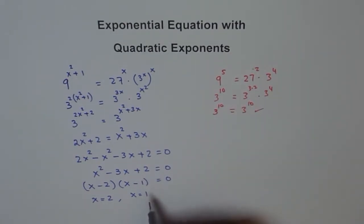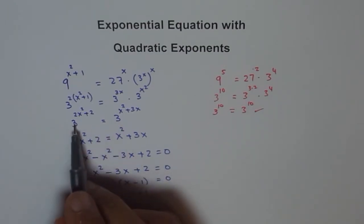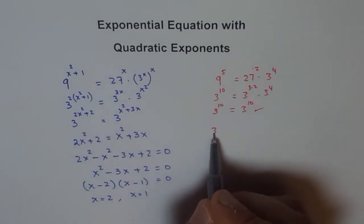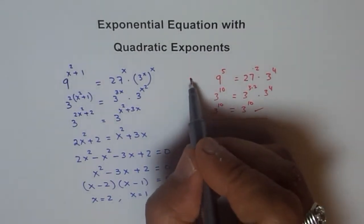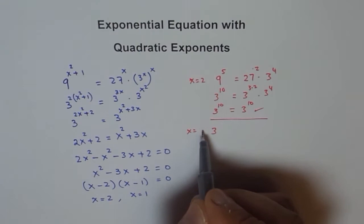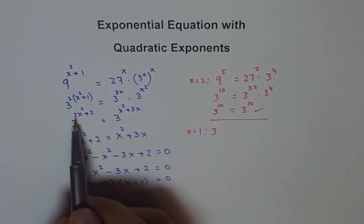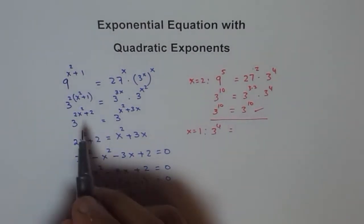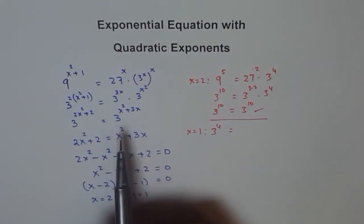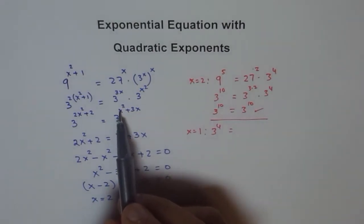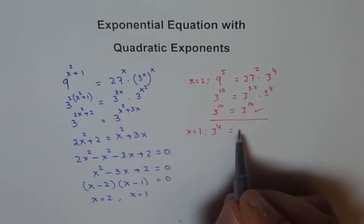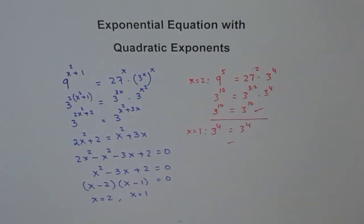Now let's try x equals 1 using the base-3 equation. Putting x equals 1 on the left: 1 squared plus 2 is 2 plus 2 equals 4, giving 3 to the power of 4. On the right: 1 squared plus 3 times 1 is 1 plus 3 equals 4, giving 3 to the power of 4. Both sides match, so x equals 1 is also correct. Both solutions are valid.